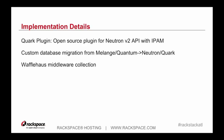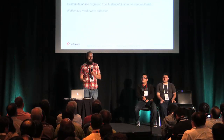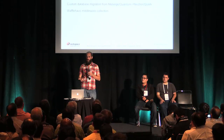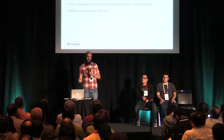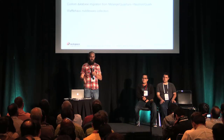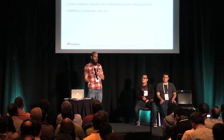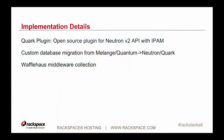Upstream generally has one way of viewing what the API should do, and sometimes Rackspace's business requirements require that we do something slightly different. We don't want to keep going upstream for every little niche case that we need. So we implemented a Waffle House stack — what we call our middlewares — to be able to tweak some of those business requirements but still maintain the regular Neutron API.